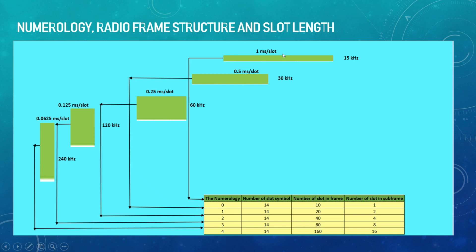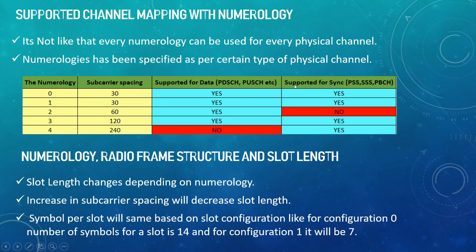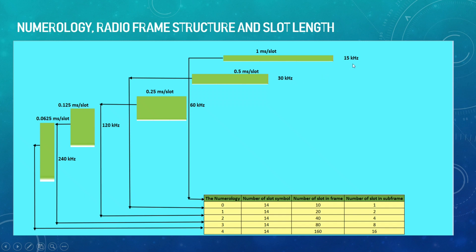Here we can see that increasing the subcarrier spacing decreases the slot length. For numerology 0 at 15 kilohertz, slot length is 1 ms. For numerology 1 at 30 kilohertz, it is 0.5 ms per slot. For 60 kilohertz it is 0.25 ms per slot, for 120 kilohertz it is 0.125 ms per slot, and for 240 kilohertz it will be 0.0625 ms per slot.